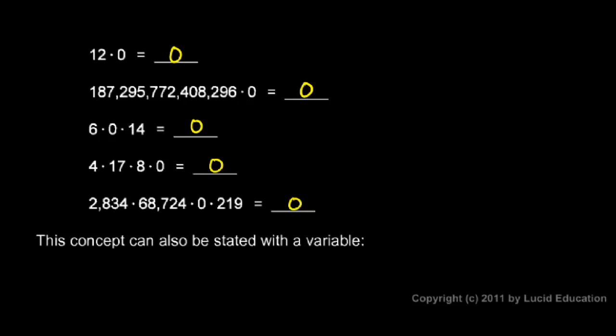I'm going to write that down here where there's a little more room. a times 0 equals 0 for any number a. Once again, we've taken this idea that any number multiplied by 0 is 0 and written it mathematically.